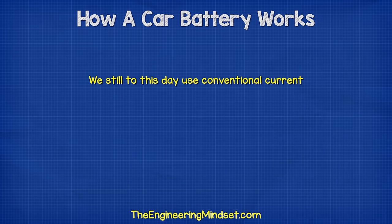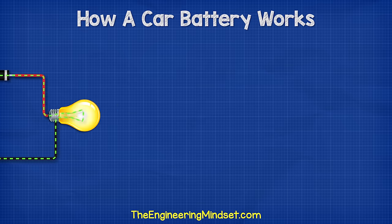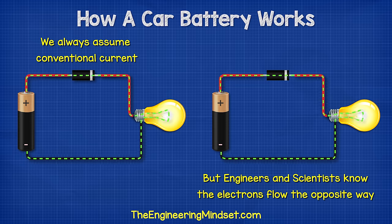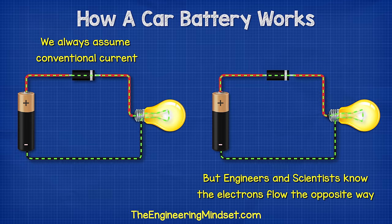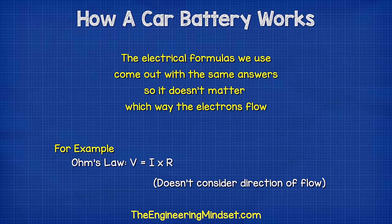However, we still to this day use conventional current theory when designing electrical circuits. In a simple circuit we must always assume that the current is flowing from the positive to the negative — but engineers and scientists know that electrons are actually flowing in the opposite direction. The electrical formulas we use will still come out with the same answers regardless of which way the electricity is flowing, so it doesn't really matter.